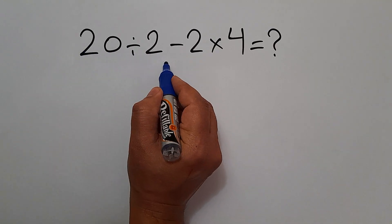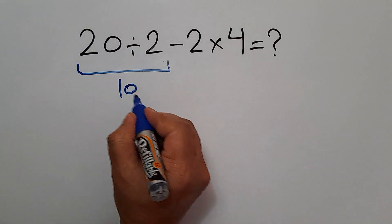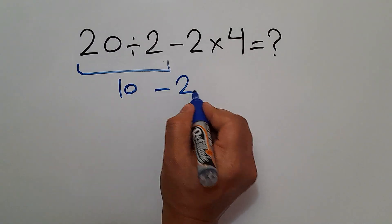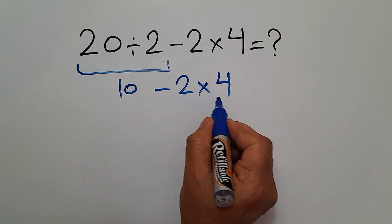20 divided by 2 equals 10. So 10 minus 2, then times 4. And here, we first do this multiplication.